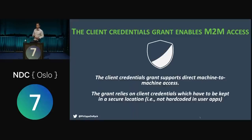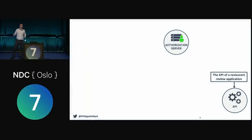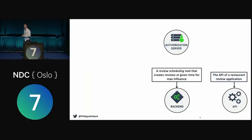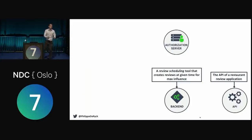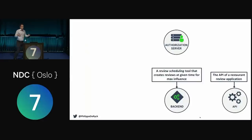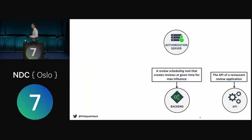Most use cases rely on some user-based access — a client accessing a resource on behalf of a user. For that use case we have our restaurant review application, and a client that allows you to schedule reviews. An influencer might want to post reviews at the optimal time — not at 9 a.m., but about 5 p.m. in the evening. So you use a tool to schedule reviews so they come out at the perfect time.